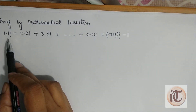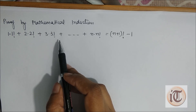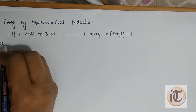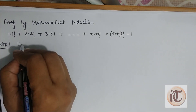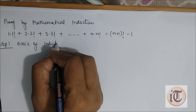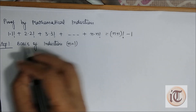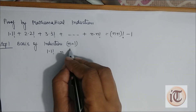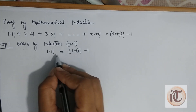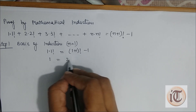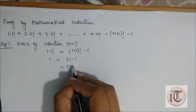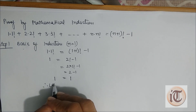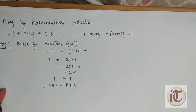The second question is: 1·1! + 2·2! + 3·3! + ... + n·n! = (n+1)! - 1. Step 1, basis of induction: put n=1. Left hand side gives 1·1! = 1. Right hand side gives (1+1)! - 1 = 2! - 1 = 2 - 1 = 1. So left hand side equals right hand side.